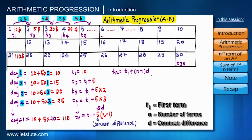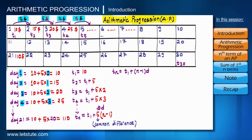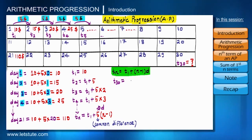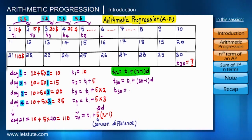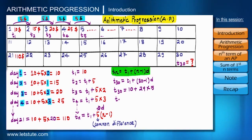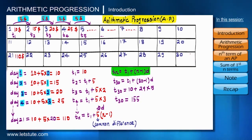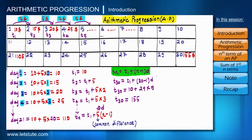Let's use this equation to find the payment on the 30th day, that is on 30th November. Using the formula: t30 equals t1 plus (30 minus 1) times d, which is 10 plus 29 times 5. So the payment on 30th November will be 155 dollars. Here we have the general expression for any arithmetic progression, and using it we can find any term of that progression.